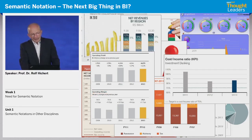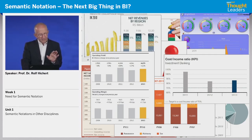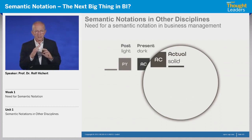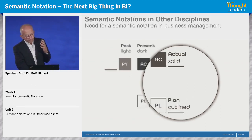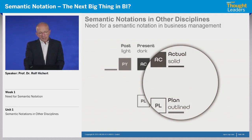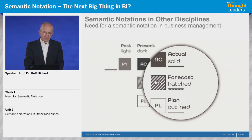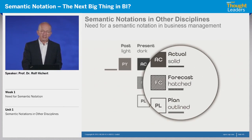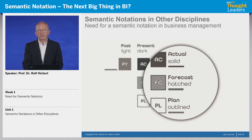What I would like to come to at the end of this little introduction is that we need a language like others have. That means we say: actual is dark and solid, plan is outline, and forecast is hatched — somewhere in between. We do not use colors for this because we need colors for other forms of meaning. This was the first unit of our course, and I hope I could give you a little introduction to what we are looking at. We will continue in the next unit with the top semantic rules we need in order to communicate our content. Thank you.